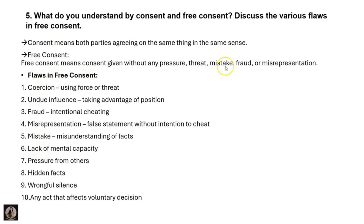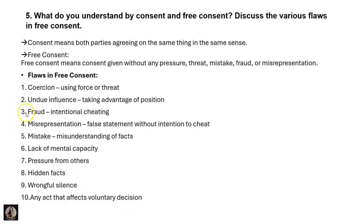The flaws in free consent: coercion means using force or threat; undue influence means taking advantage of position; misrepresentation is a false statement without intention to cheat; mistake means misunderstanding of facts; lack of mental capacity; pressure from others; hidden facts; wrongful silence; and any act that affects the voluntary decision. These are all the flaws of free consent.